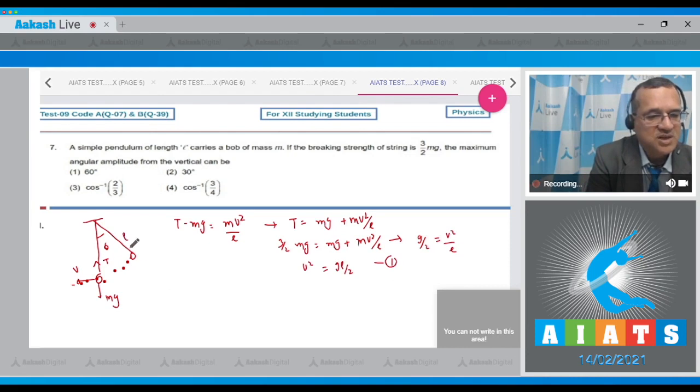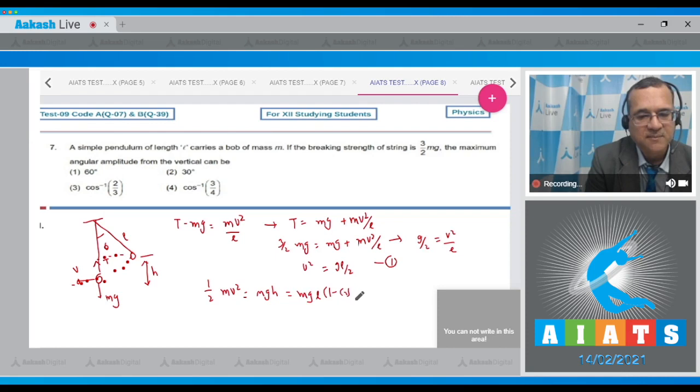Now as it is coming down, L was the length. By energy method, 1/2 mv² should equal mgh. From geometry, if this is theta then this would be L cos theta and h is L minus L cos theta. So this equals mgL(1 - cos theta). Theta we are about to find out.